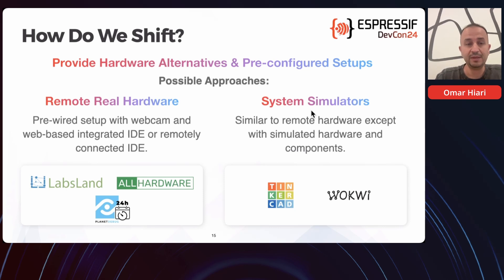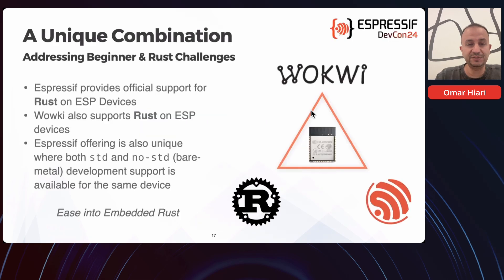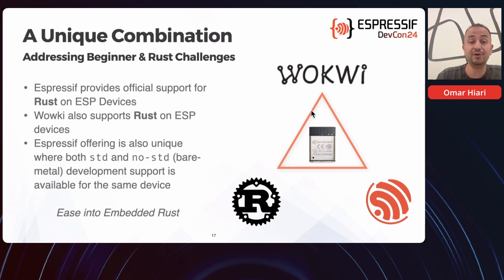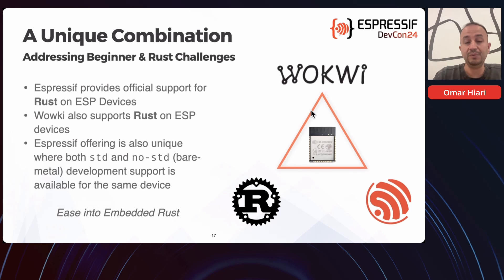Within that context, to the extent of my knowledge, there are two solutions: WACWI and Tinkercad. In terms of the ESP ecosystem, there's actually a unique combination available right now for beginners to use, which is WACWI with ESP devices or boards and Rust. Espressif, within their ecosystem, provides official support for Rust on ESP devices and also for Rust on WACWI. So you can actually spawn a simulation with several options of ESP devices, hook up components, and start coding right away. Another interesting part is that it offers support both for the core library and the standard library, making it more comfortable for those familiar with Rust but not necessarily embedded systems.